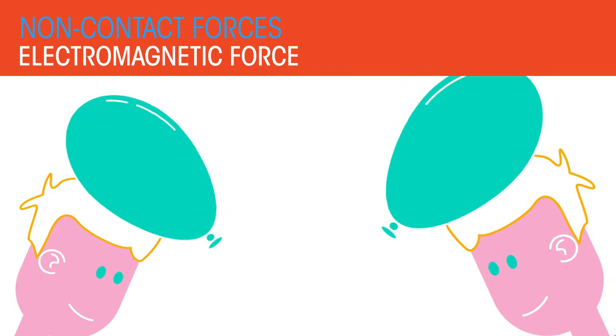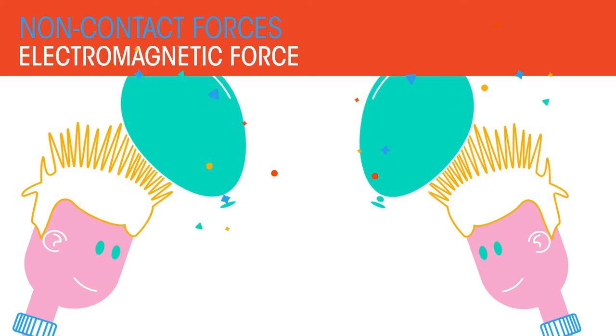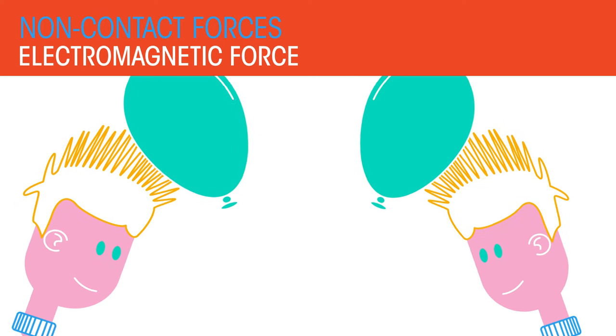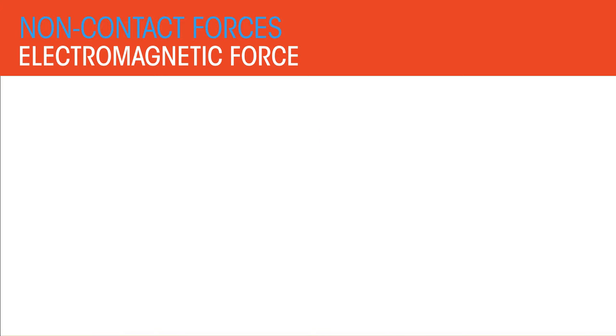Electromagnetic forces are forces that act between charged objects. For example, when you charge a balloon by rubbing it against your head, and your hair is attracted to the balloon. Or the forces between a magnet and a magnetic object.